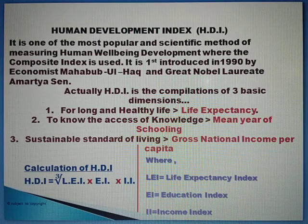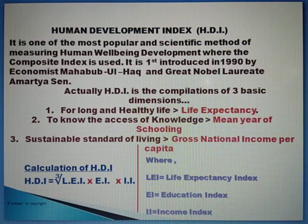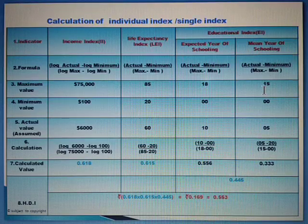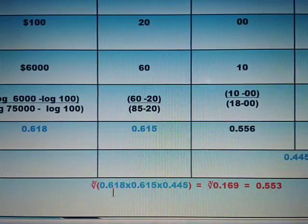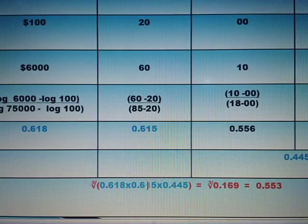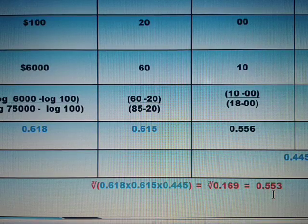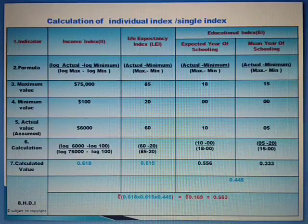After finding out the individual indices, we compile them using the HDI formula — the cube root. The Life Expectancy Index is 0.615. For the Educational Index, this column represents expected years of schooling and this column represents mean years of schooling. To find the Educational Index, add these two values and divide by two, giving 0.445. The Income Index is 0.618. Multiplying all three values and taking the cube root gives the Human Development Index, which is 0.553.